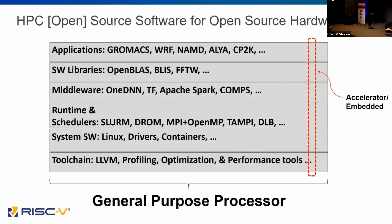This is a challenging process and we can't tackle it all at once. The general purpose processor space has a lot of software and a huge lift to be compatible. We're seeing a very pragmatic approach where we're using accelerators or embedded spaces to drive the software ecosystem and select tangible, tractable components that can focus the development of the software side along with the hardware development.